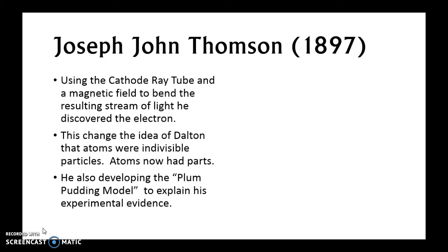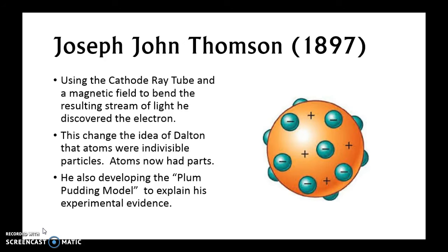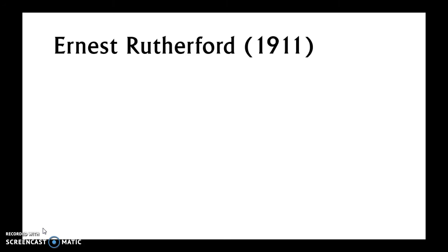Thompson also developed something called the plum pudding model — in class we talked about it as the butter pecan ice cream model, same idea. It's a spherical model where little pieces represent the negative charge and the main body or bulk represents the positive charge. In the butter pecan ice cream analogy, the pecans represent the negative and the buttery cream represents where the positive was found.